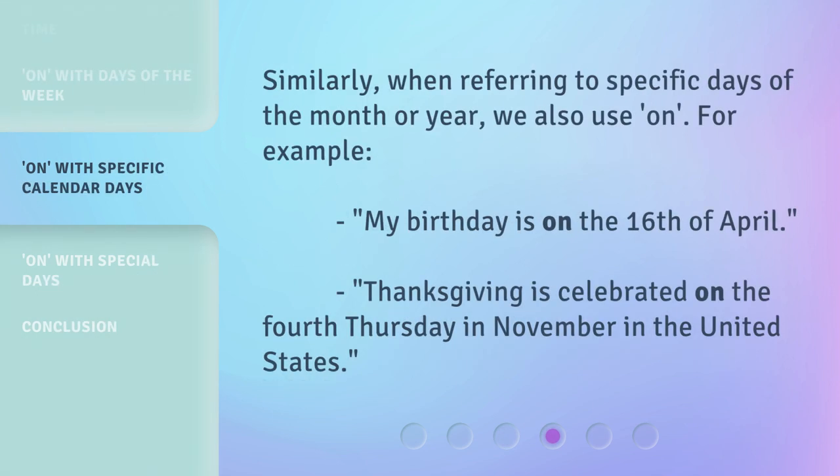Similarly, when referring to specific days of the month or year, we also use ON. For example, 'My birthday is on the 16th of April.' 'Thanksgiving is celebrated on the 4th Thursday in November in the United States.'